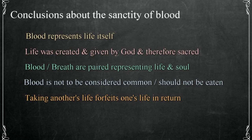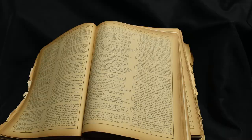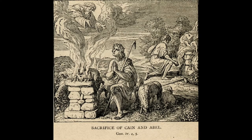We can summarize why blood is sanctified by God. Blood represents life itself; life was created and is given by God and therefore sacred. Blood is paired with the breath as representing life and the soul. Blood is not to be considered common and should not be eaten. The taking of life forfeits one's life in return. Now that we've seen that blood has been sanctified by God, we can examine how this is paired with the idea of sacrifice. From a very early point in the biblical narrative, sacrifice emerges as a practice of the faithful.